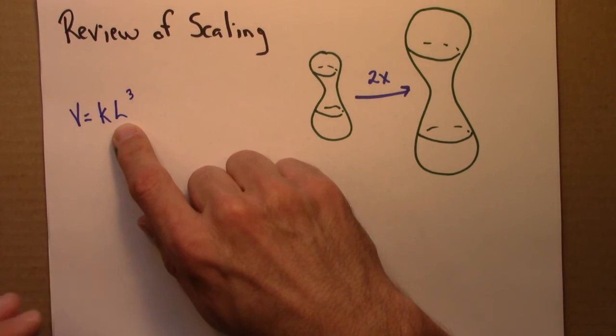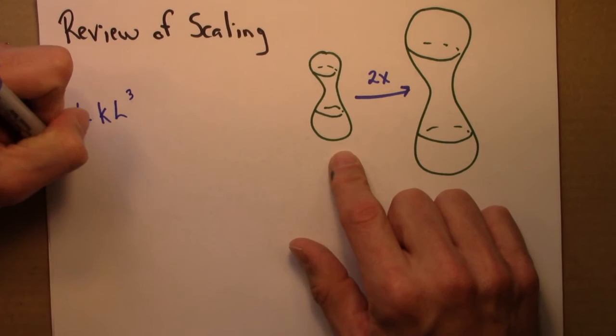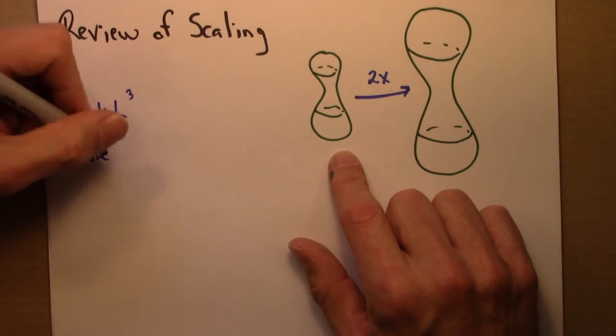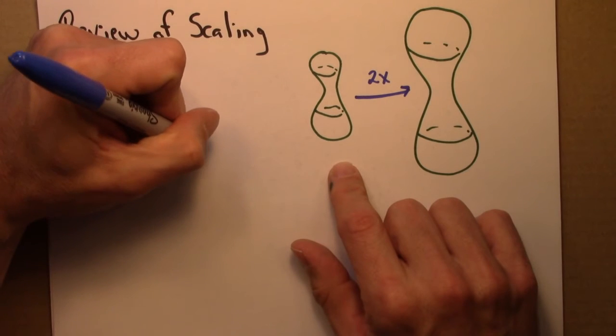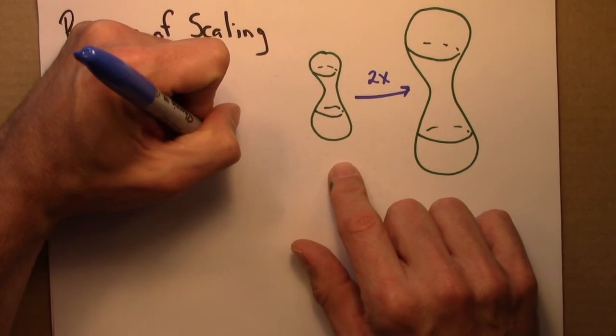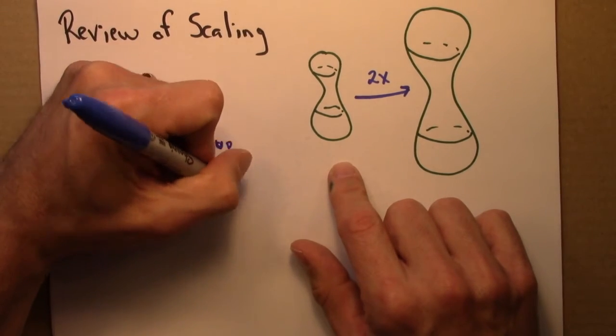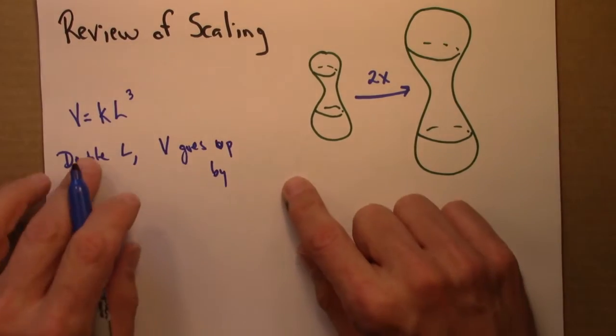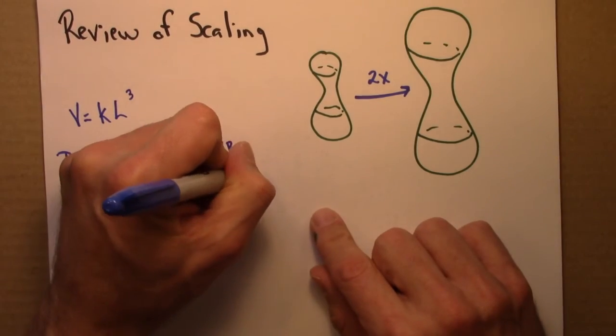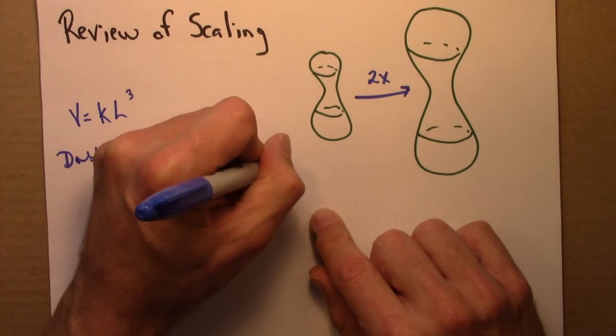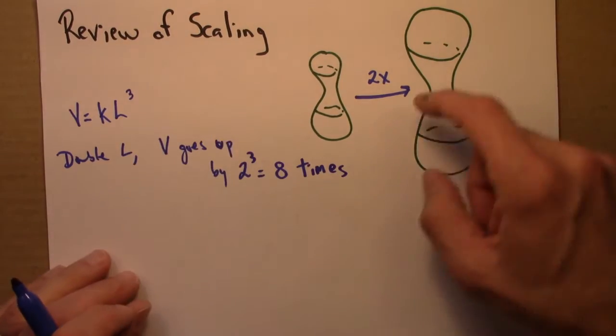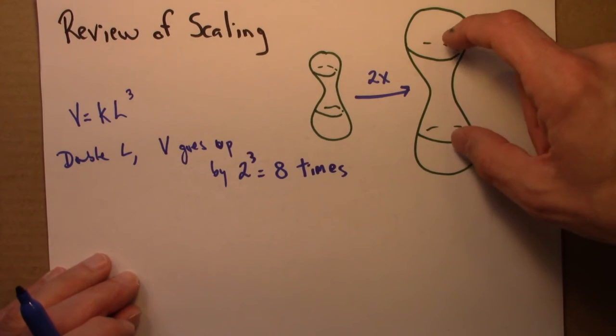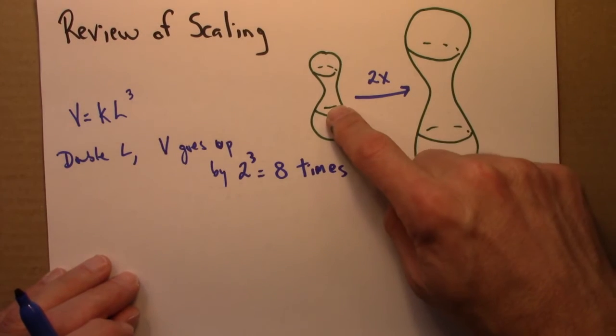So what this means is that if I were to double L, V goes up by not 2, not 4, but 2 cubed equals 8 times. So this shape has a volume 8 times larger than this shape.